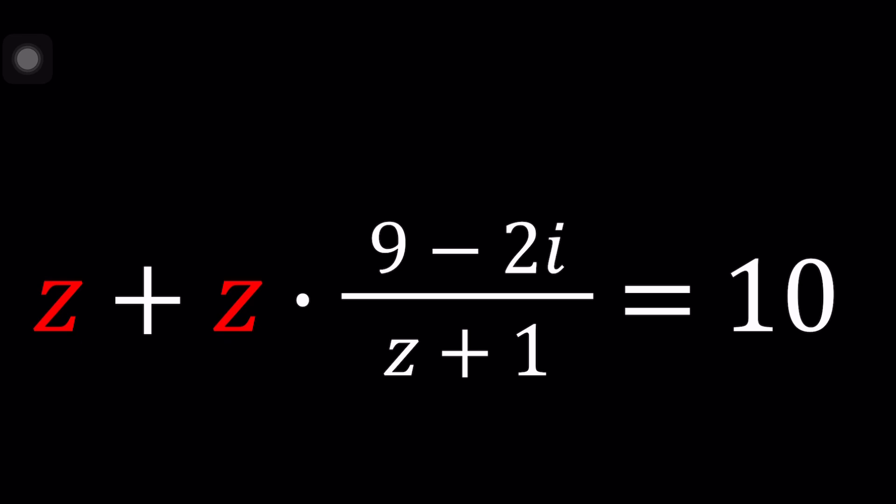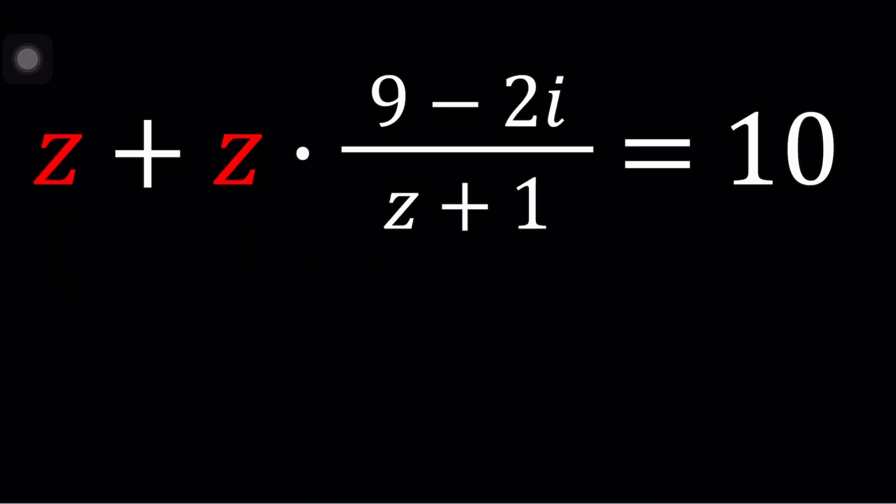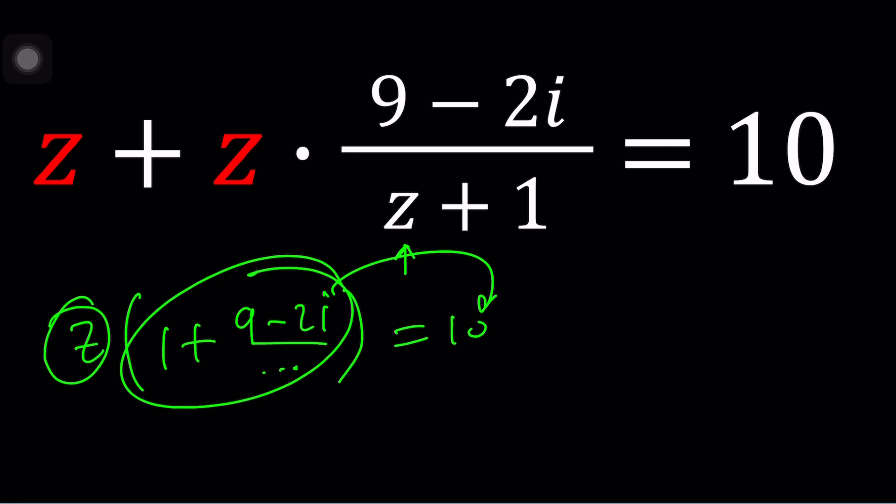Now at the bottom, at the denominator, if we did not have z plus 1 but instead we had something like 1 plus i or 2 plus 3i, a complex number, then we could easily factor out a z. We could write it as z times some complex number equals 10, and then we could simplify and divide 10 by that and get z right away. But that would be too easy, don't you think? That would be an exercise, but we're after problems.